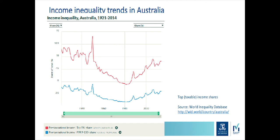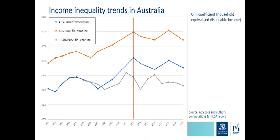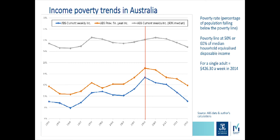Looking at recent trends in Australia — that's the U-shape we've seen in the share of income going to the top 1%, very much driven by the share of income going to the top 0.1% of the population, a very small group. Looking at the Gini coefficient, with different series from the ABS or from the HILDA survey, there are issues about comparability over time, but it seems there was an increase in the years leading up to the GFC, and since then either a stable or somewhat declining trend. In terms of poverty, the picture is a bit clearer: an increase leading up to the GFC and pretty much a steady decline since then.